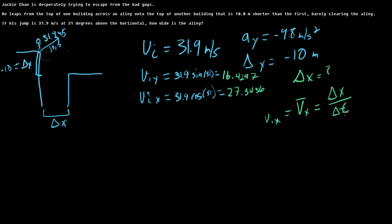Now we've already got vx, because it's the same as vi x in this case. So we need delta t. How can we find delta t? Well, we can do some kinematics over here. We've got vi y, ay, and delta y.